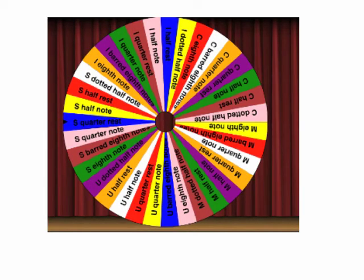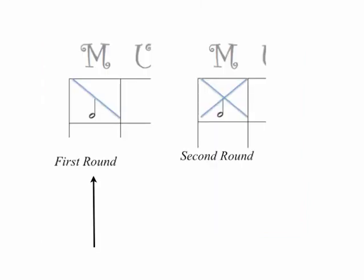Then your teacher will spin the wheel, and up will come one of the notes for music bingo. My recommendation is that when she calls, for instance, M half note, you put a diagonal line for the first round, so that when we do the second round, you can then make an X so that you know which notes were called for the first round and which notes were called for the second round, so that you can use the same bingo card.